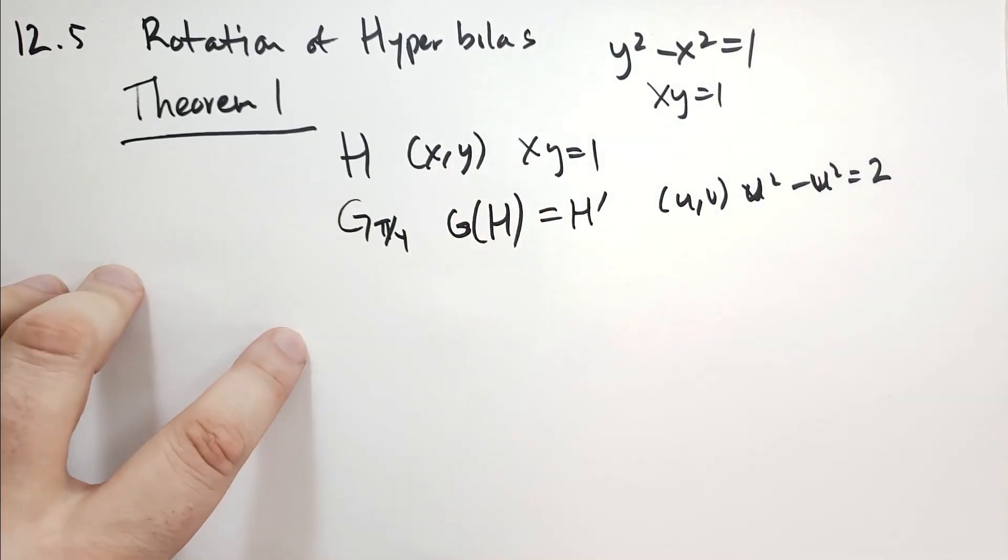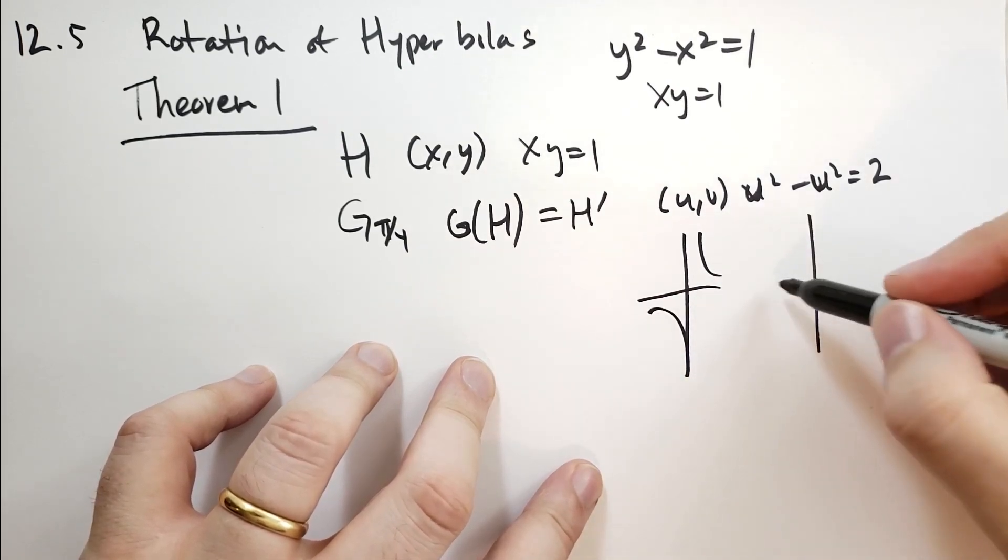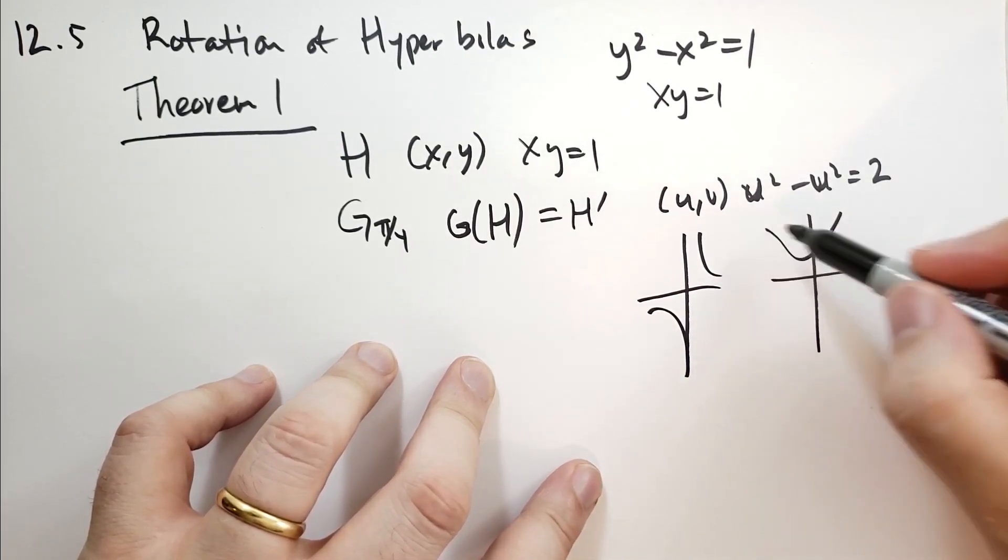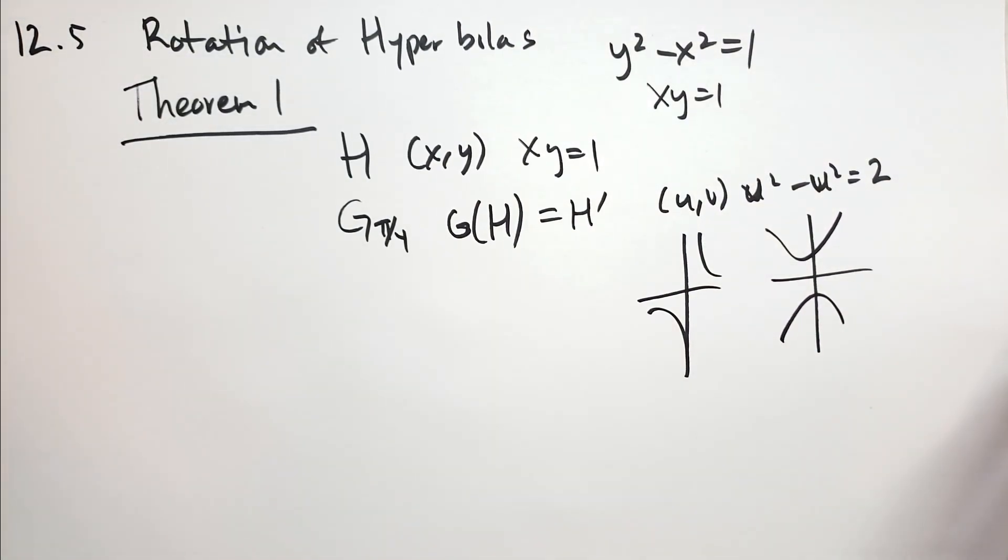And he has a little picture that you can look at, I'll draw the picture for you really quick, this is xy equals 1, and this is the graph v squared minus u squared is equal to 2. Alright, let's do the proof.